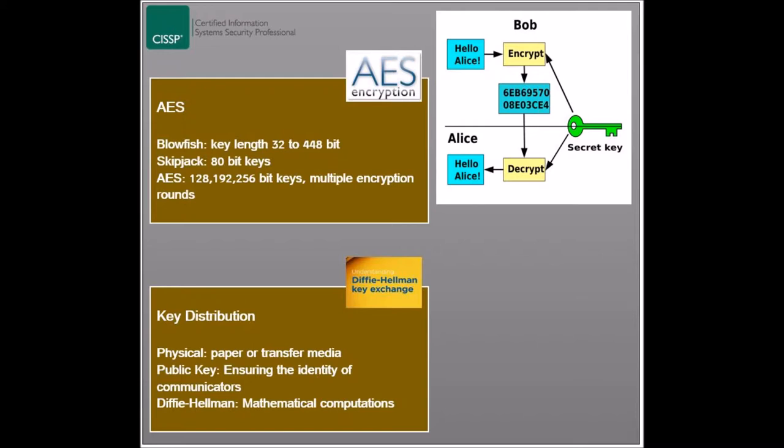Since the key is used for both encrypting and decrypting messages, both communicating entities should have a copy of the key. This situation presents the issue of having to distribute the key, and to ensure a secure key communication, three methods are used.